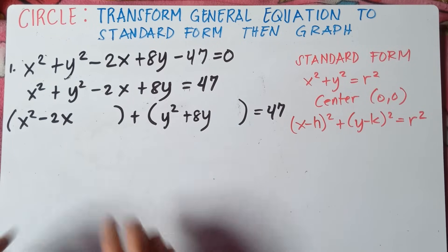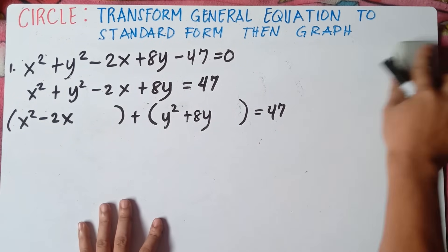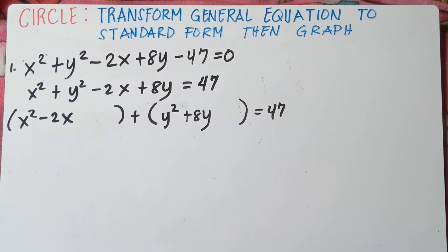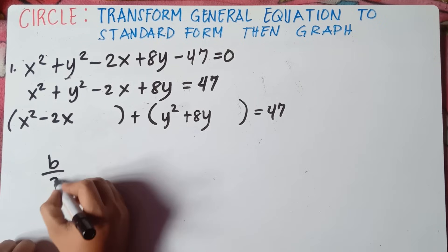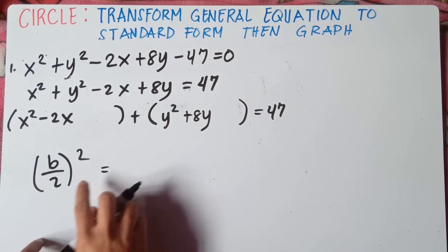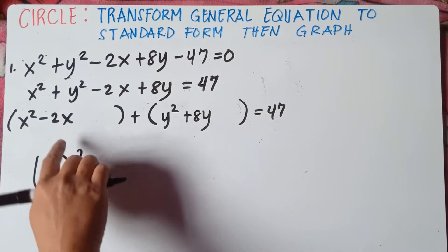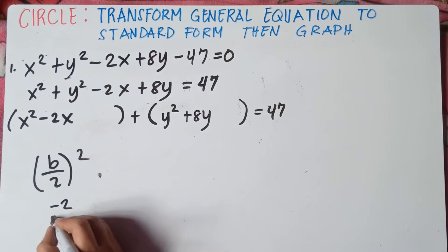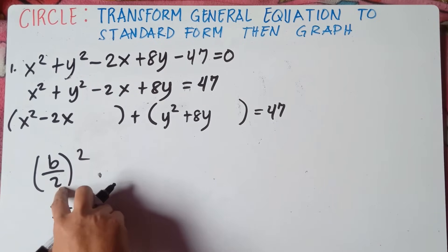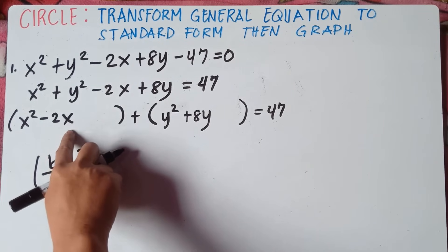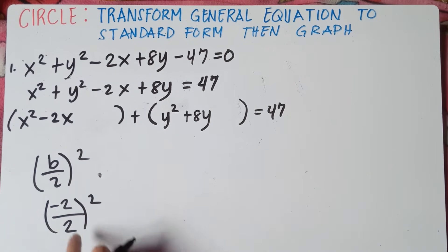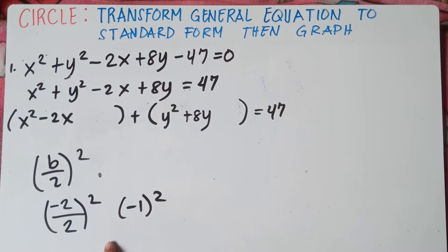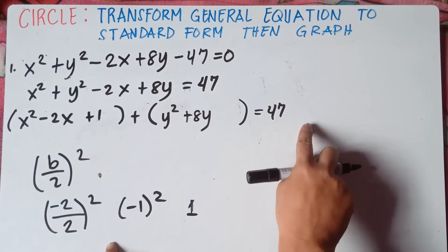Next, we need to add a new constant using completing the square. The formula is b over 2, quantity squared. Our b here is the coefficient of the linear term beside x. That is negative 2. So negative 2 divided by 2 gives negative 1 squared. Negative 1 times negative 1 is positive 1. So we add 1 on the left side. Once you add 1 on the left side of the equation, you also add 1 on the right side.